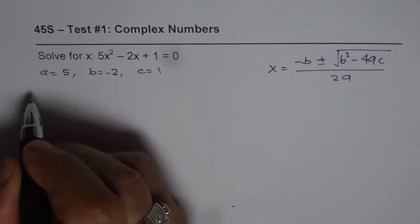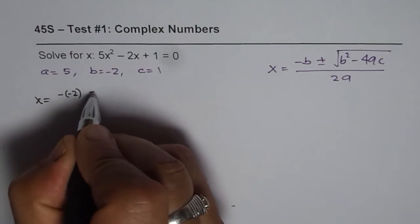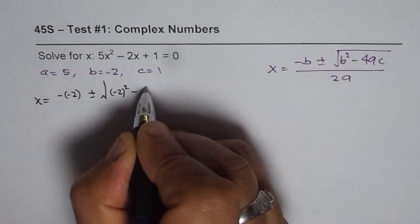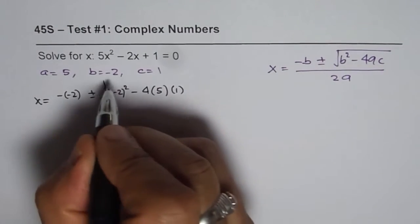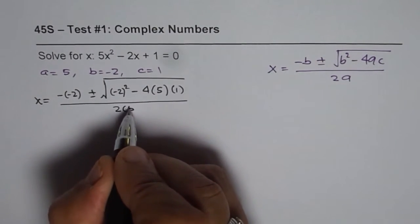So we get x equals to minus of b, so let me write -(-2), plus minus square root of (-2)² minus 4 times a is 5 and c is 1, divided by 2 times a, which is 2 times 5.